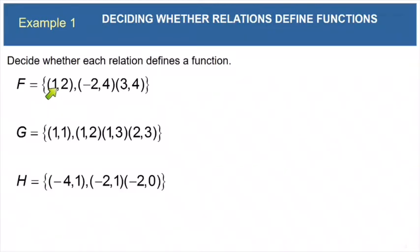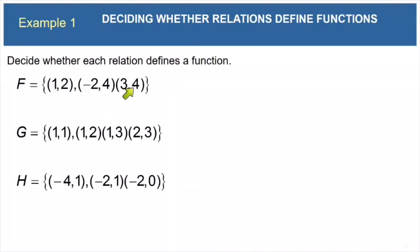So here I have the x value 1, and that matches a 2, and I don't have the x value of 1 anywhere else. And here I have the x value negative 2, and that matches a 4, and negative 2 does not match up with any other y values. And then here we have the x value 3, and that also matches a 4. Now a lot of times it bothers students that we have the y value repeated, but remember the definition only requires that each x value matches only one y value. So f is a function.